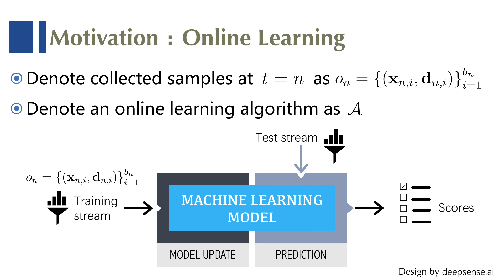When we talk about online learning, we mean the algorithm or model will adjust and update itself upon each new track from the data stream, and will forget old data based on a specified timeframe so as to adapt to new patterns.